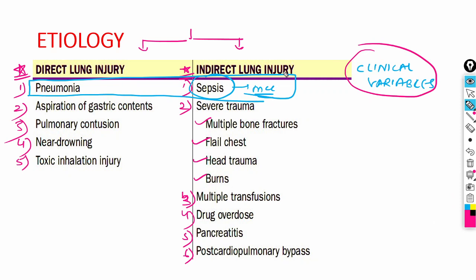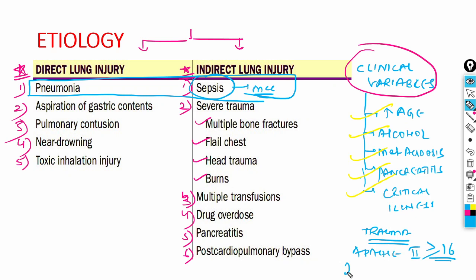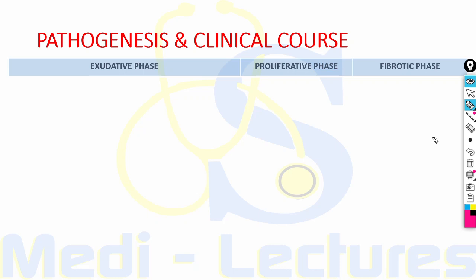Not all individuals with underlying illness develop ARDS. Clinical variables associated with a high risk of developing ARDS include increased age, alcohol abuse, metabolic acidosis, pancreatitis, and critical illness. In trauma patients, the APACHE 2 score can predict risk — patients with an APACHE 2 score of 16 or more have a 2.5-fold increased risk of developing ARDS.